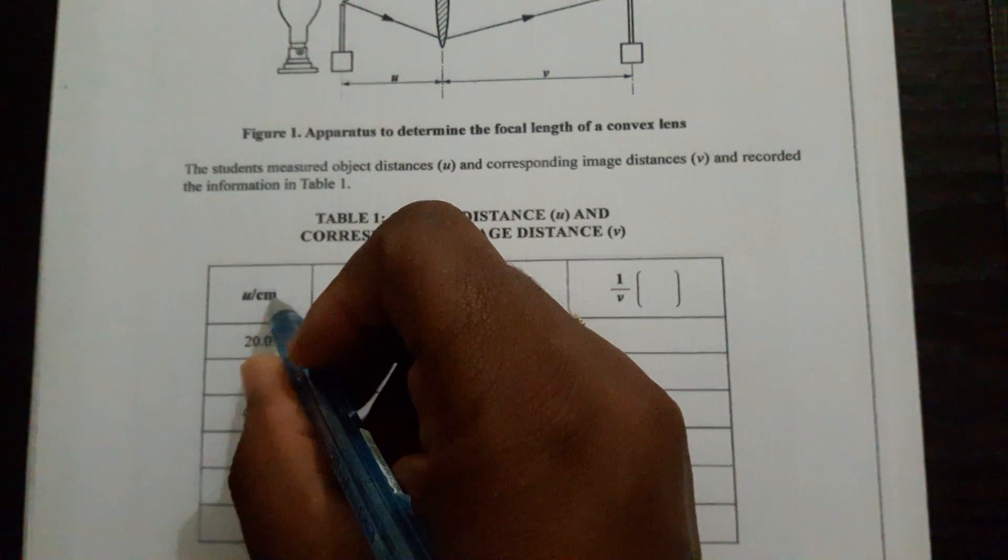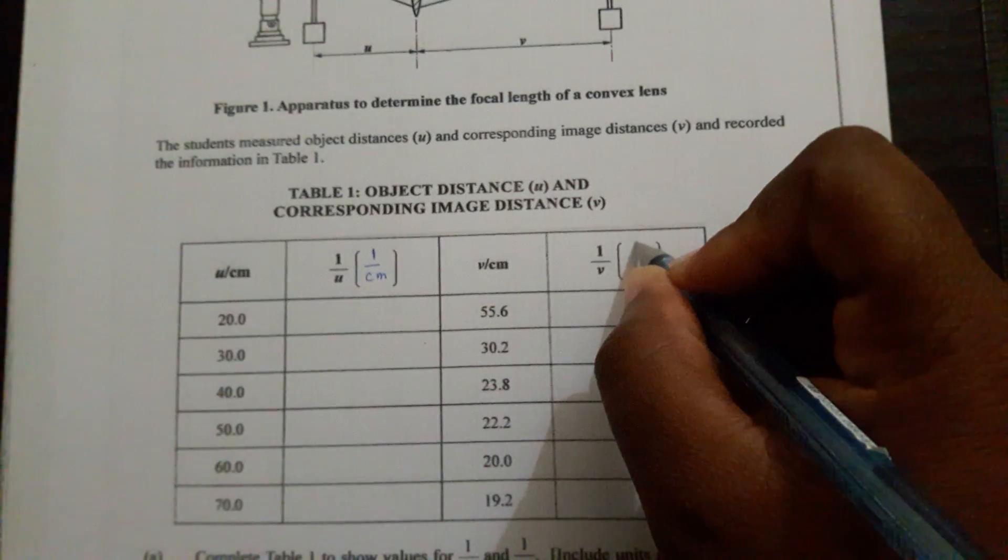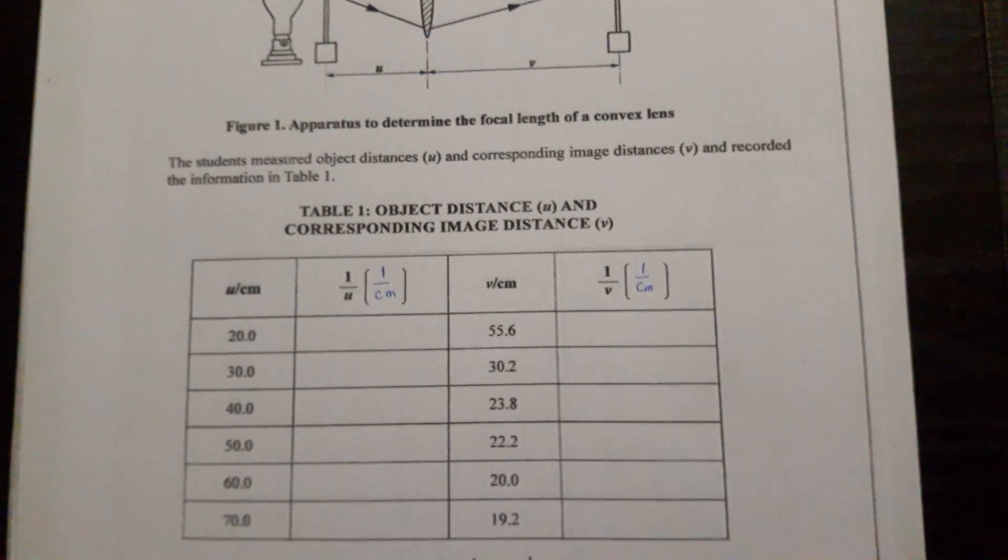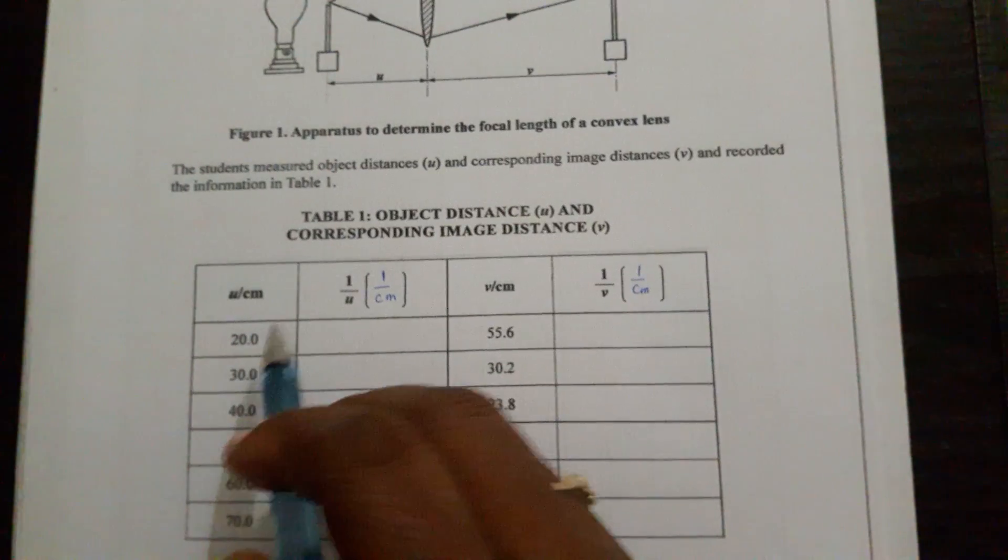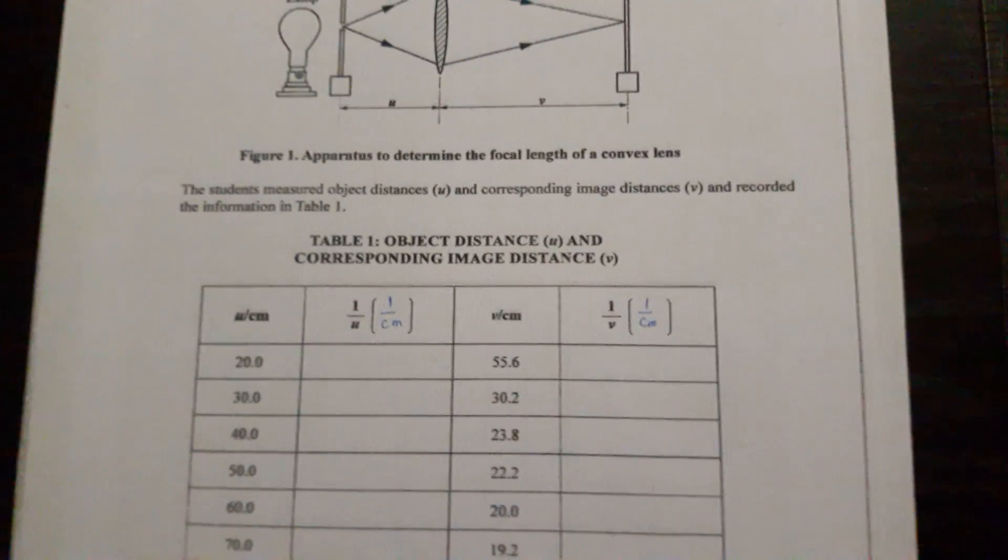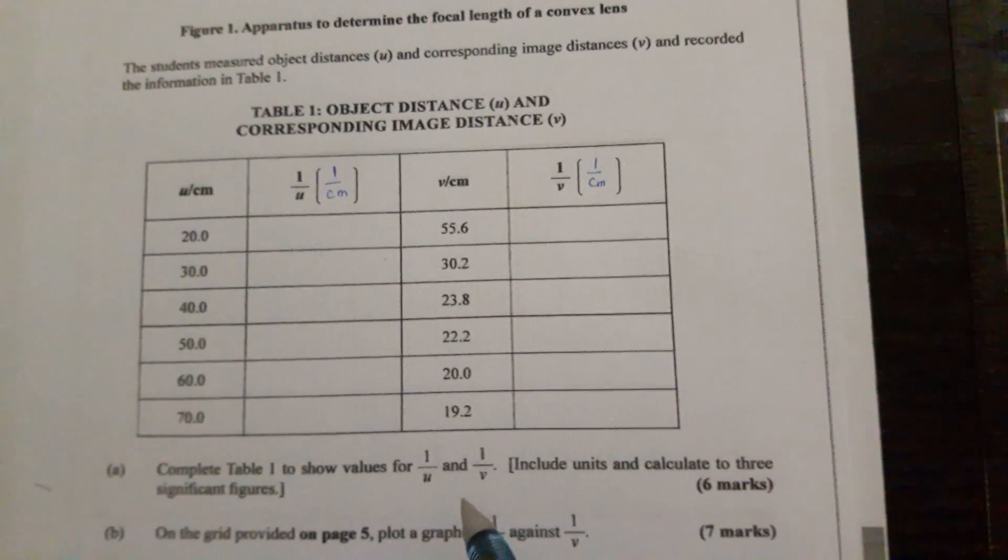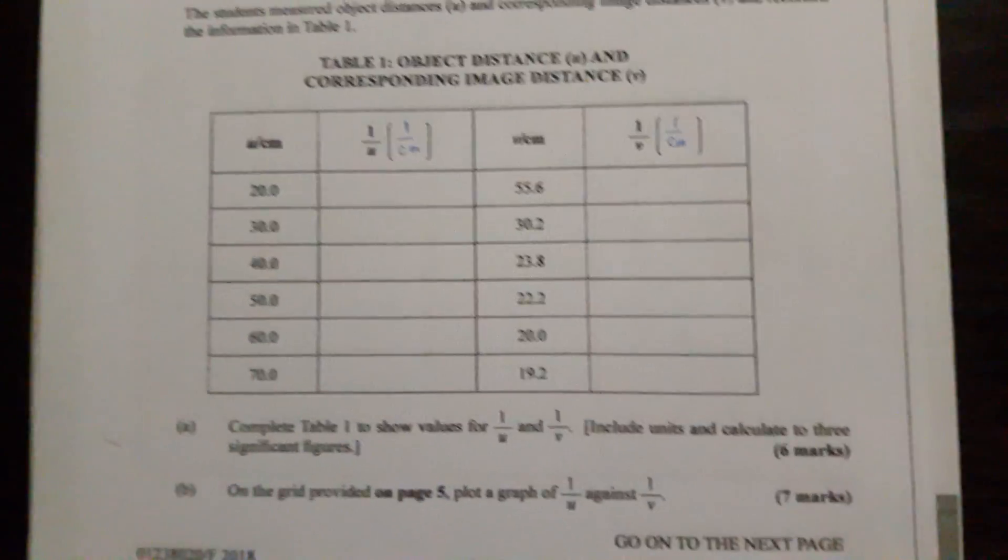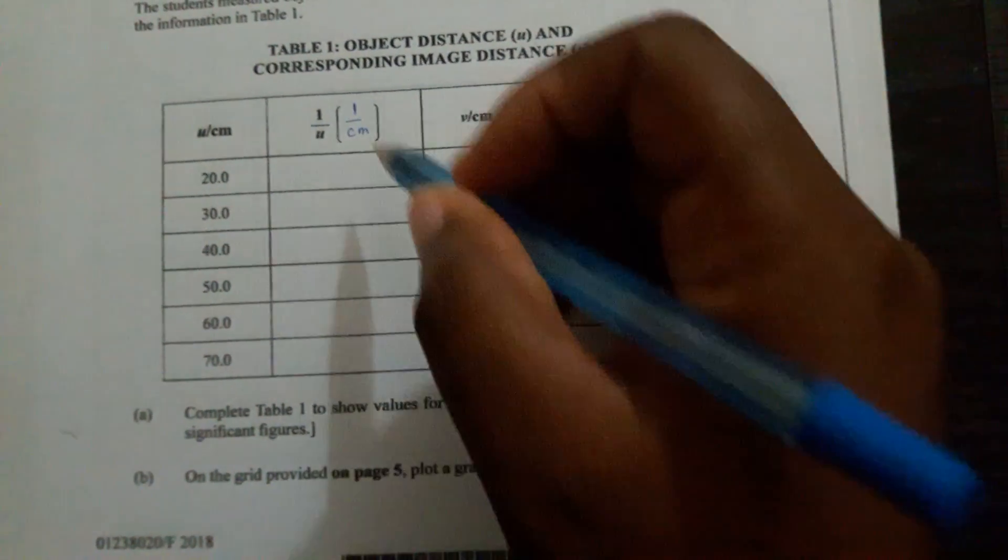They wanted to write down what the units would be in here. Since this is in centimeters, the unit will be one over centimeter, and the same thing for here. Then they want you to calculate what will be in here. You'll put one over each of these numbers. These boxes correspond to this. The first one also said complete the table with values of one over u and one over v, include units, and calculate to three significant figures. You have to include the units and then do three sig figs, not include units all the way down, it's already up here.